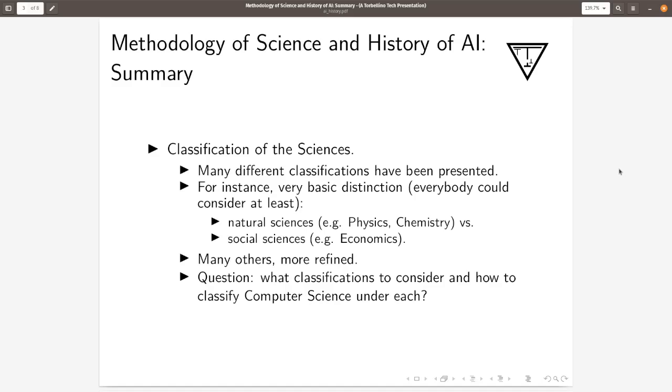For instance, there is a very basic distinction that everybody could consider, which is the natural sciences like physics and chemistry versus the social sciences like economics. There are many other classifications, more or less refined, more or less subtle. And so the question is what classifications to consider and how to classify computer science under each.